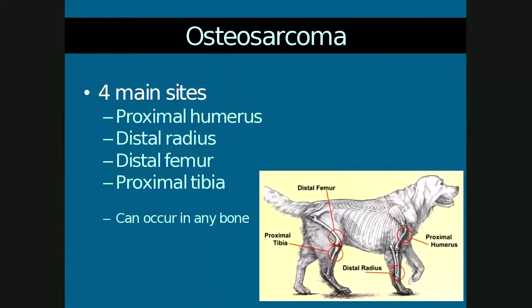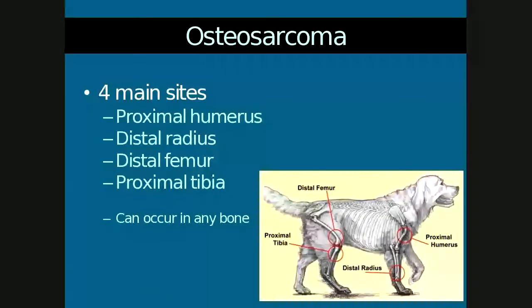Osteosarcoma affects four main sites: the proximal humerus, the distal radius, the distal femur, or the proximal tibia. I always remember it as away from the elbow towards the knee. But it can occur in any bone.